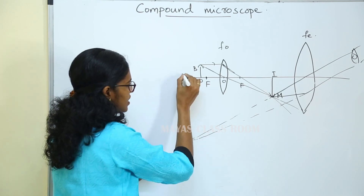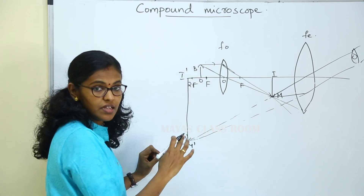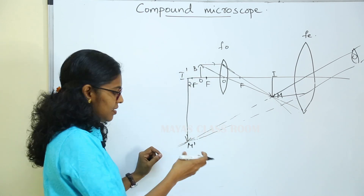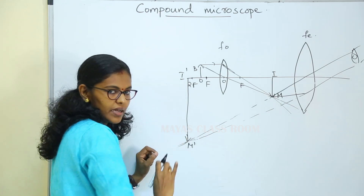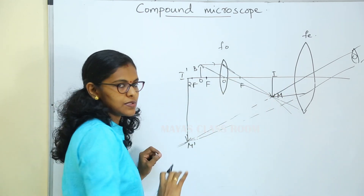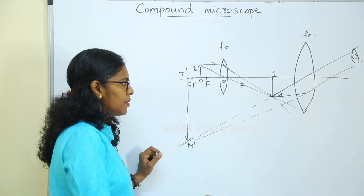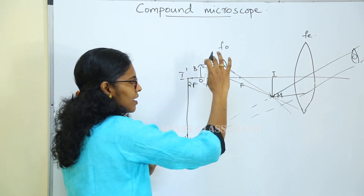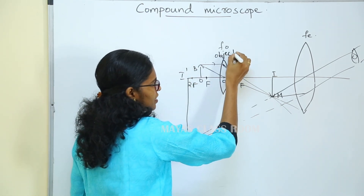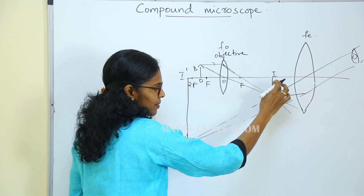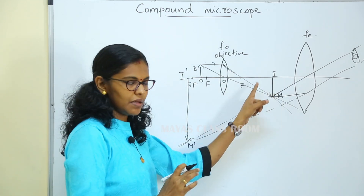The final image is called I-dash M-dash. This is a virtual image. If you want to see this image, I-dash M-dash is the final image formed by the eyepiece. The intermediate real image acts as an object for the eyepiece, which forms this virtual final image.